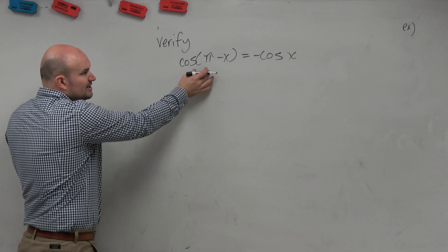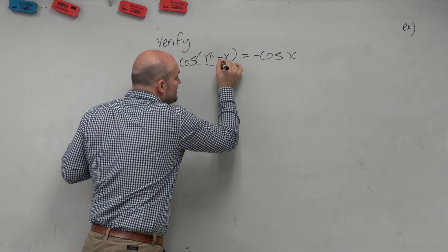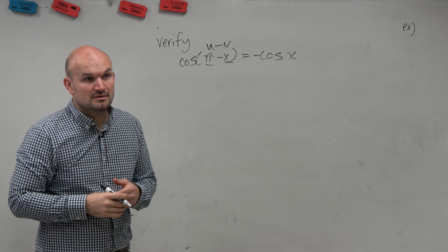We could try. Why don't we recognize the difference, the u minus v of two angles, for cosine?